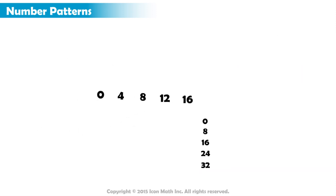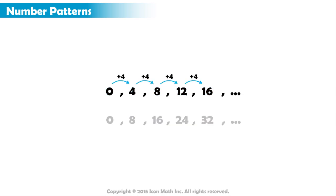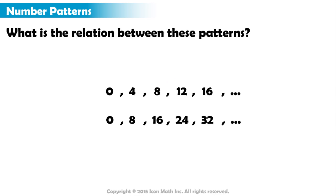Let's take a closer look at the two number patterns. We know the relation between every two consecutive numbers in each pattern, which is add four in the first pattern and add eight in the second one. But is there a relation between the two patterns? A relationship can be found by looking at every two elements that lie in the same position from each pattern as a pair. These are called corresponding elements.